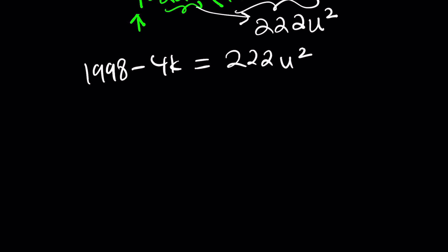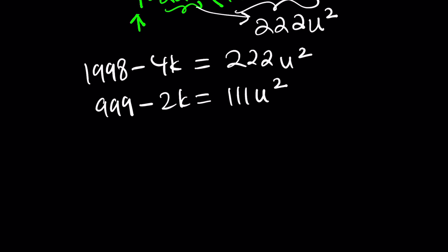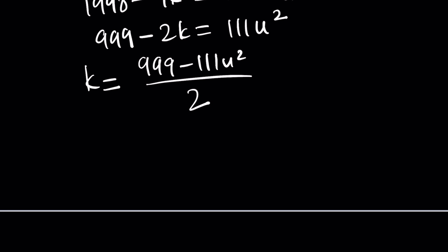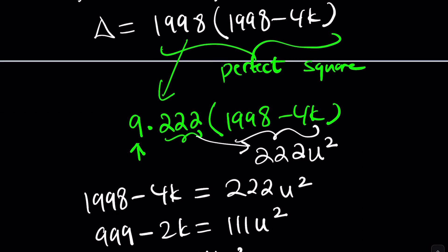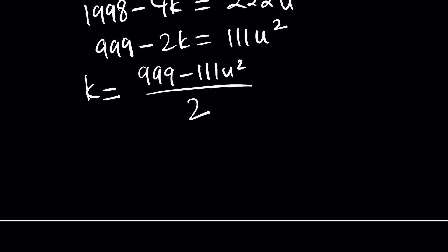We can simplify by dividing by 2: 999 minus 2k equals 111u². We can isolate k: put k on the right, divide by 2, bring u² over. Remember, k needs to be positive because k is the square root of xy. Also, 111 is odd, so u² must be odd, which means u must be odd.